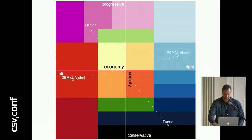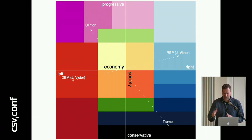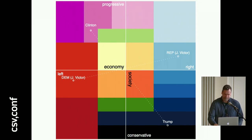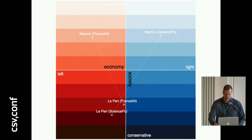And here also, another one where you see basically a prediction of what would happen with the Democratic and Republican Party, and what really happened. And obviously there are also people who put politicians differently in this color space.